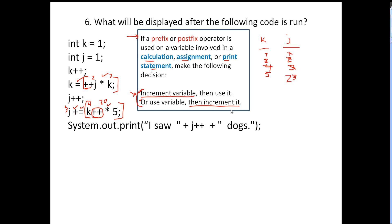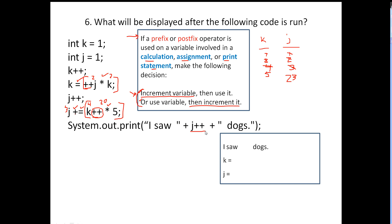Next we're going to start printing. We have a postfix increment operator — it's not part of a calculation or assignment, but it is part of a print statement, so we need to make a decision. Because it's postfix, we increment after we use J. J right now is 23, so we use it first: 'I saw 23 dogs.' Then we increment J after we're done using it in the print statement.